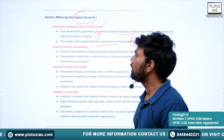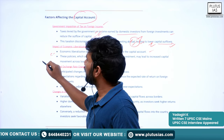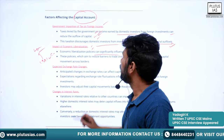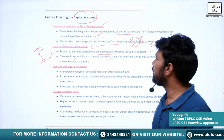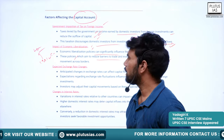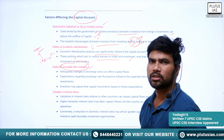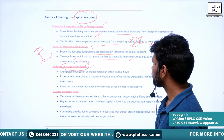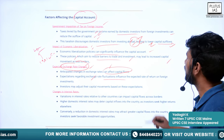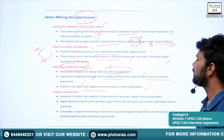Next is the impact of liberalization. Economic liberalization policies can significantly influence the capital account. This can be realized through the 1991 economic reforms — the LPG reforms: liberalization, privatization, and globalization. These policies, which aim to reduce barriers to foreign investors and trade investment, may lead to increased capital movements across borders. Next is expected exchange rate changes. Changes in exchange rates also influence the capital account and can affect capital flows. Expectations regarding exchange rate fluctuations influence the expected rate of return on foreign investments, and investors may adjust their capital movements based on these expectations.